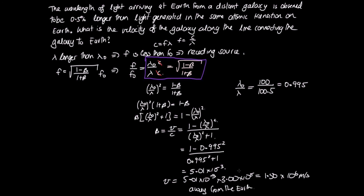Note that this solution tells us how quickly the source is moving along the line joining Earth and the galaxy. It doesn't tell us if the source is moving perpendicular to that line — motion perpendicular to the line joining Earth and the galaxy would not result in any change to the wavelength.